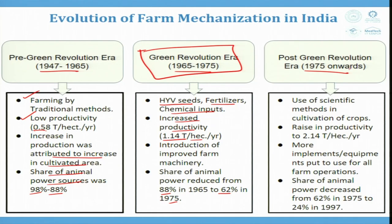Post green revolution, scientific methods in cultivation raised productivity to 2.14 tons per hectare per year. More implements were put into use for all farm operations. The share of animal power decreased from 62 percent to 24 percent by 1997, as tractors, moldboards, combines, harvesters, and cultivators replaced animals — mechanical systems fueled by petrol or diesel provided more efficient output.